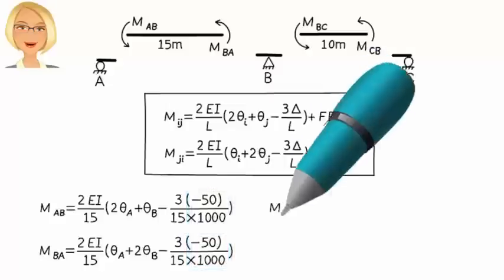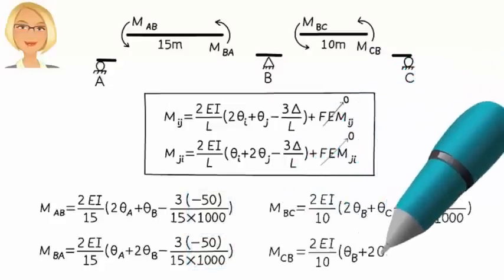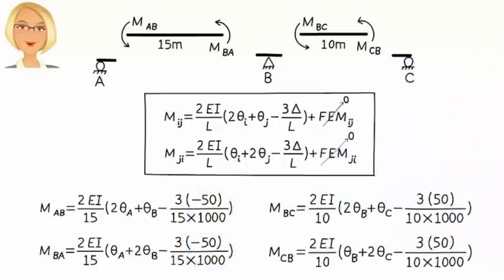For member BC, we have... Here, delta is positive 50 millimeters.